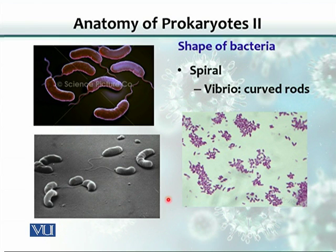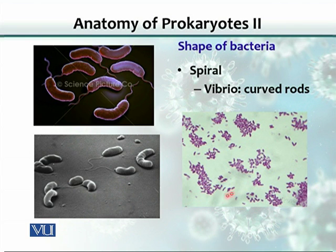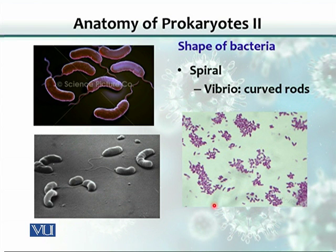This slide shows vibrio, which is a slightly curved rod. There is a diagrammatic representation, an electron micrograph, and a stained image under the light microscope. These cells are quite large compared to other bacteria. Vibrio cholerae is a very common pathogen in humans and causes cholera.